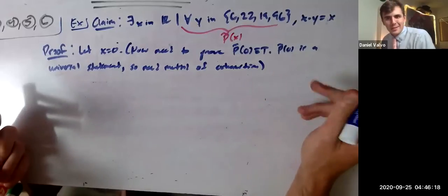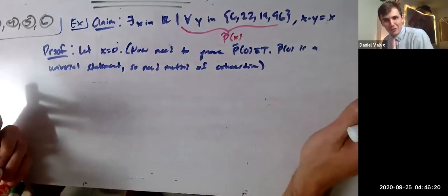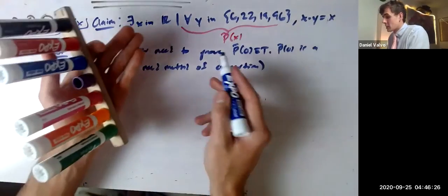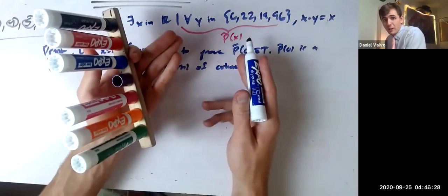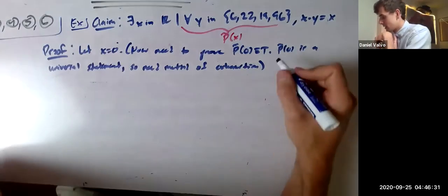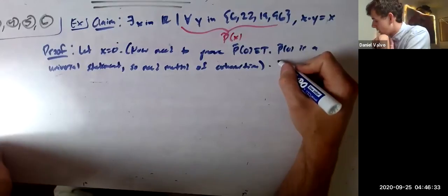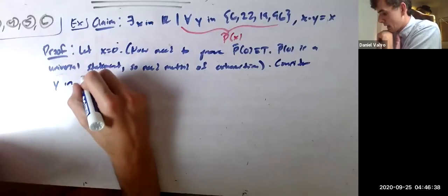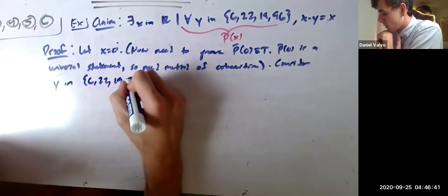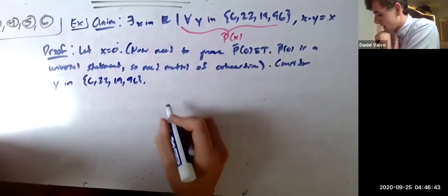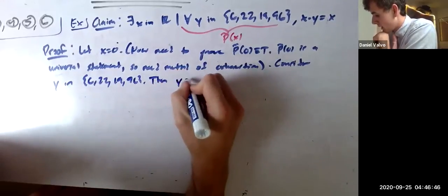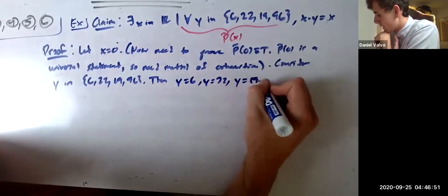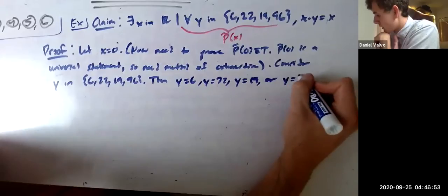By the way, the things I write in parentheses, you guys don't have to write that in your proofs. They have to have the formatting. That's just me telling you guys stuff. So the point is, letting x equal 0, to actually prove the predicate's true, we need to prove this raw statement when you plug in 0. The raw statement of exhaustion. So consider y in {6, 22, 19, 96}. Then y equals 6, y equals 22, y equals 19, or y equals 96.